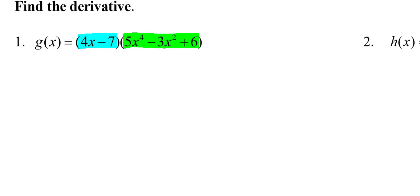Product rule says you're going to take the derivative one factor at a time while you leave the other factors alone. So g prime of x equals—and again because we're going to be adding all of these terms together in the end, it doesn't even matter what order you do it. So I'm going to take the derivative of the first factor first. The derivative of 4x minus 7 is 4, and I'm going to leave the green factor alone.